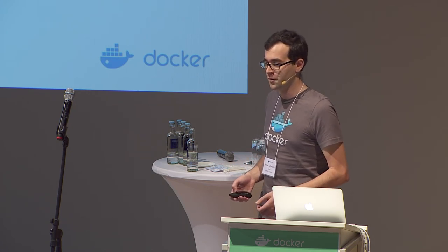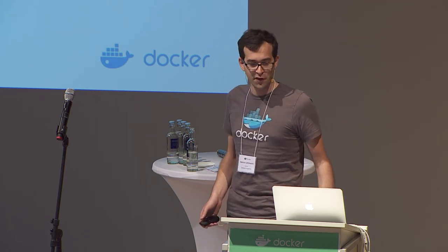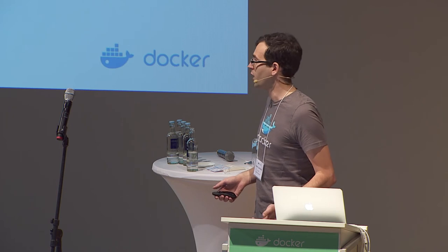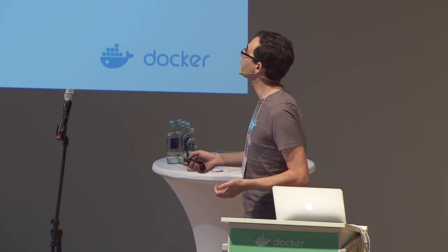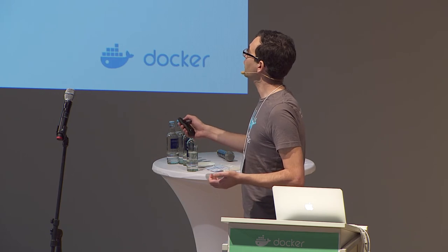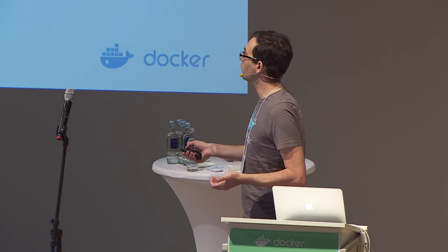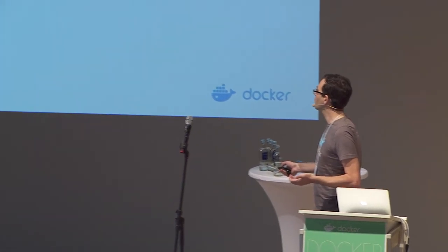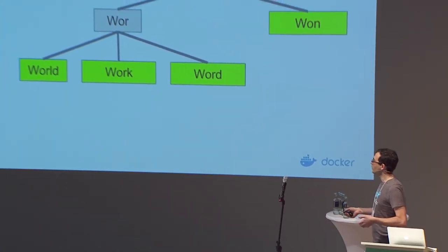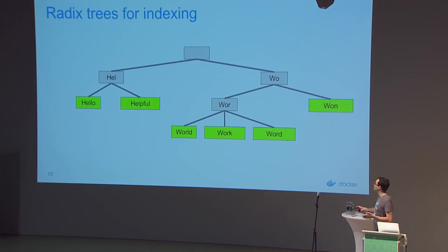The radix tree gives us some interesting advantages. To quickly go over what a radix tree is: think of it as a prefix tree. Words like hello, helpful, world, and work share common prefixes, so they get a common ancestor in the tree. Hello and helpful share H-E-L as a prefix, and a prefix node is inserted wherever you have a common prefix.